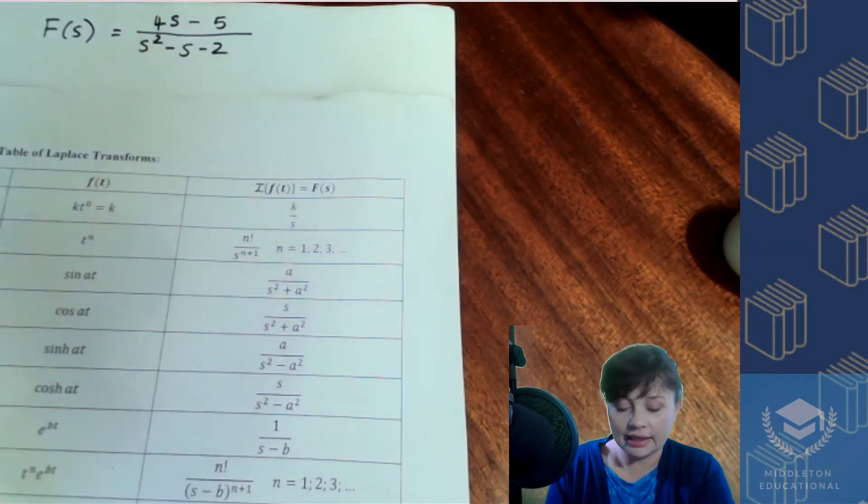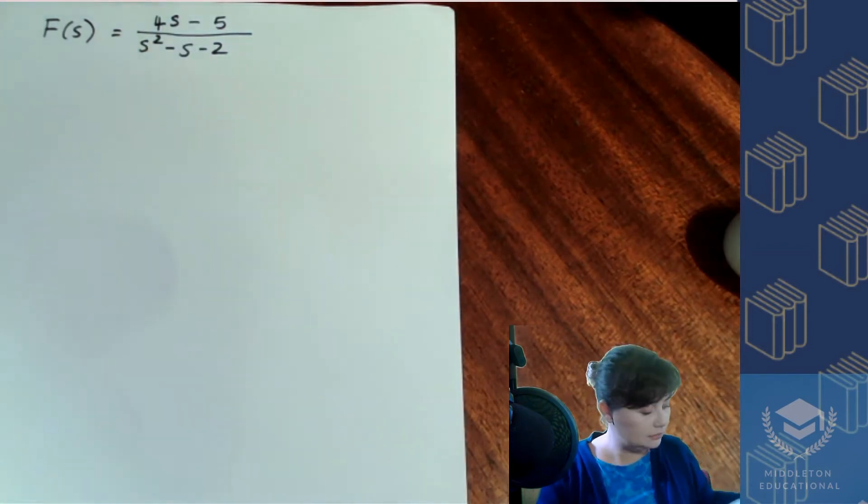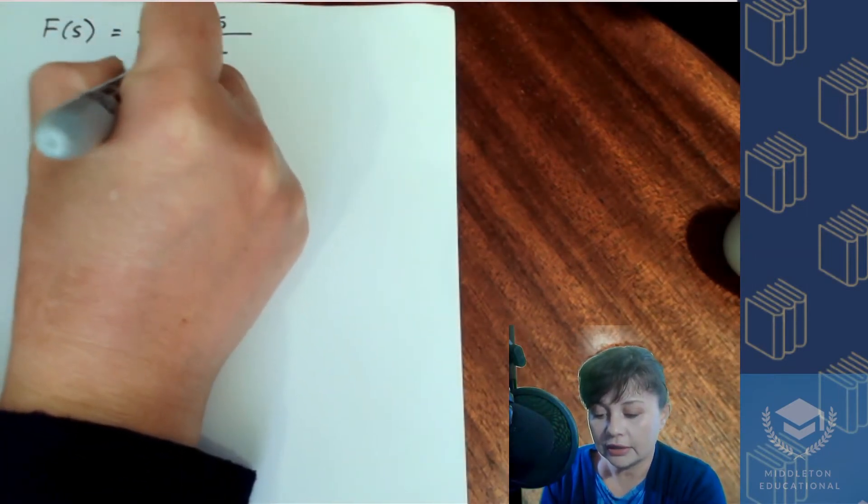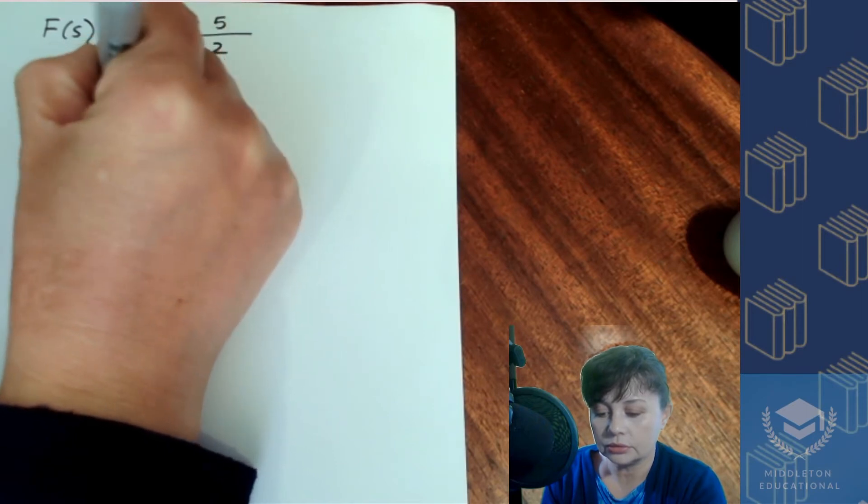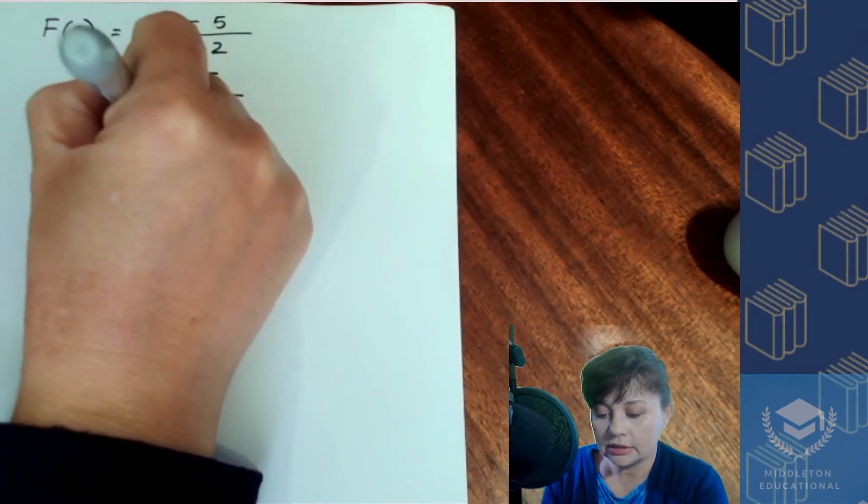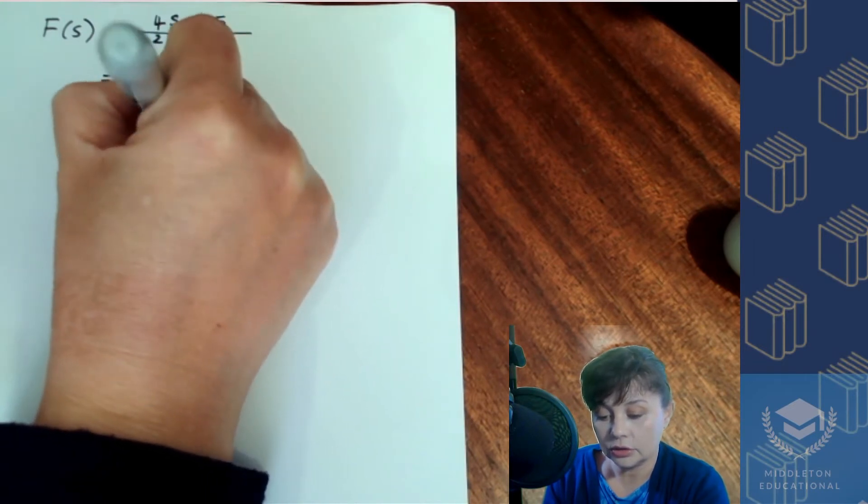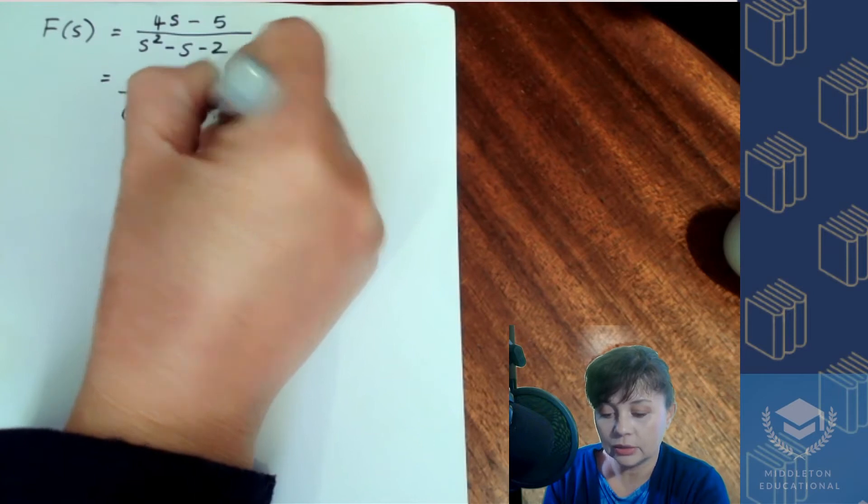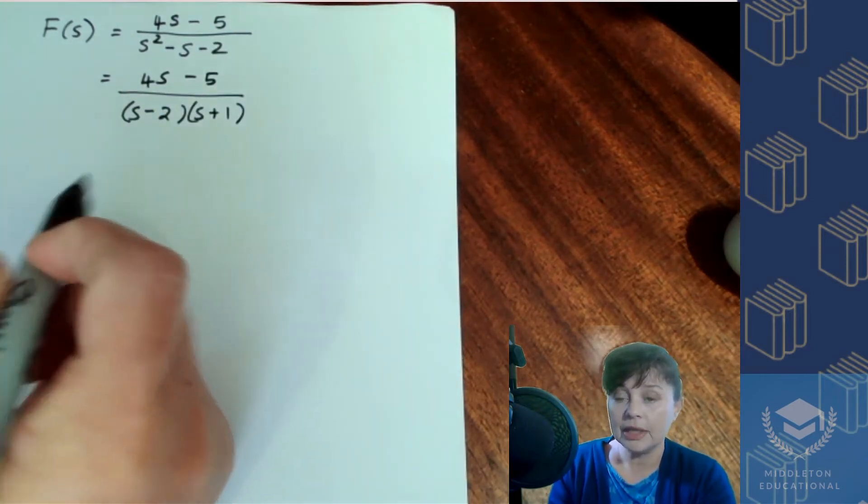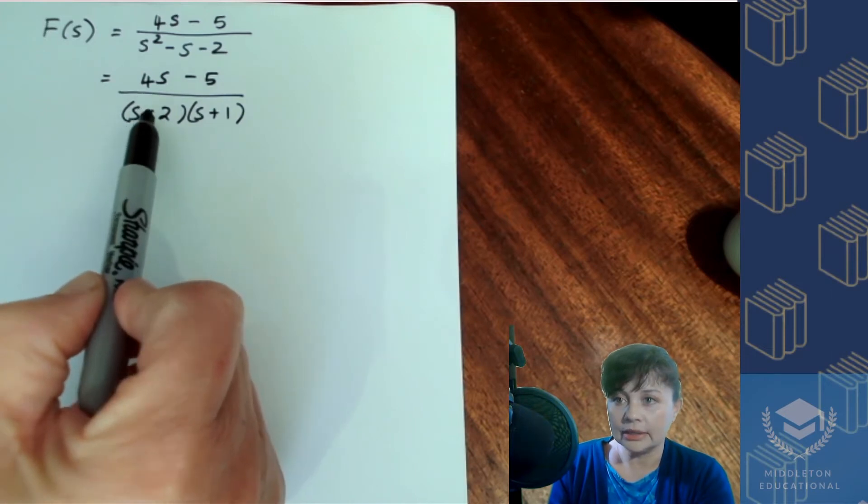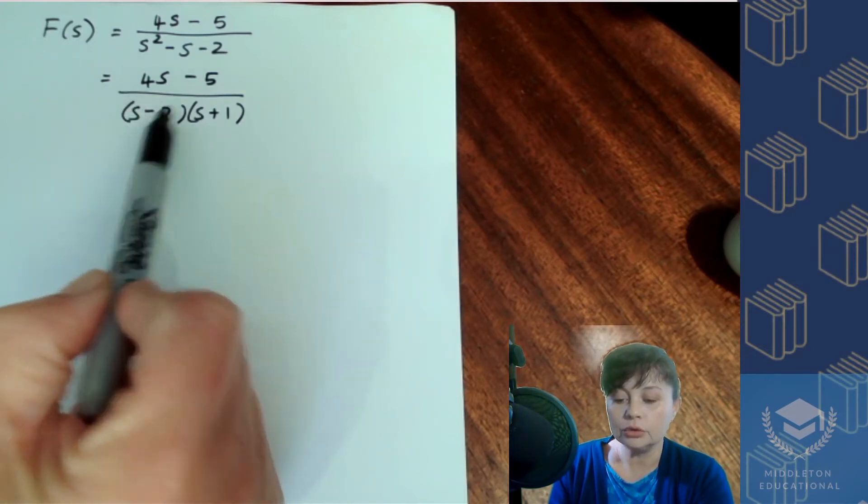And in this case, yes, I can. So let's have a look. This can factorize to, we have our two brackets, s and s, two and one, and that one's going to be minus, that one's going to be plus. So now you have a denominator where you have two factors.